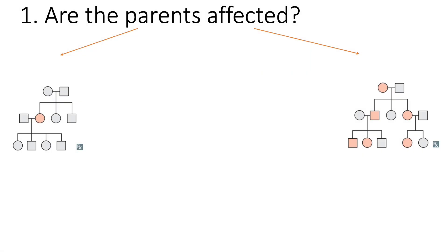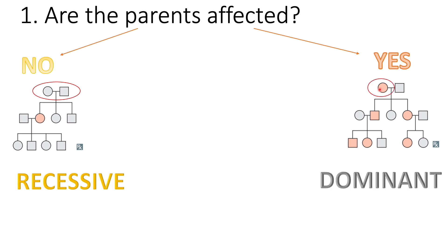The first question you need to ask yourself: are the parents affected? The question will ask you about the offspring highlighted here, but I want you to look first at the parents. If the parents are free, then this is a recessive condition. If the parents are not free, when a parent is affected, then this is dominant.